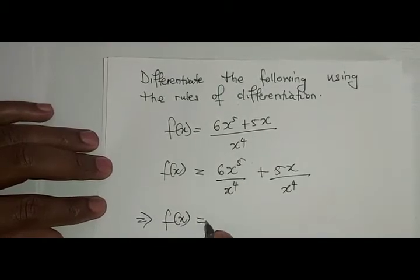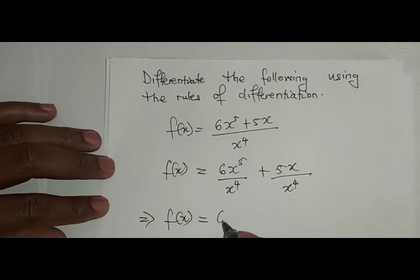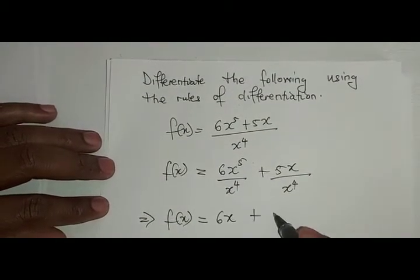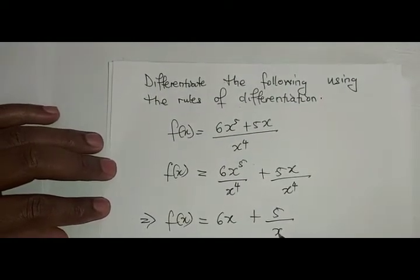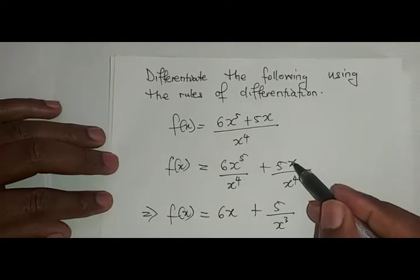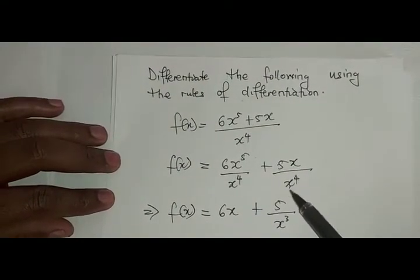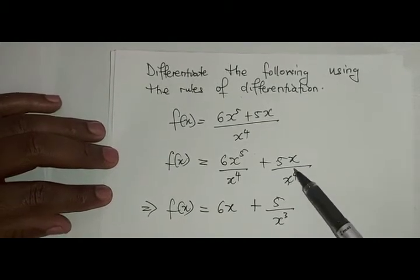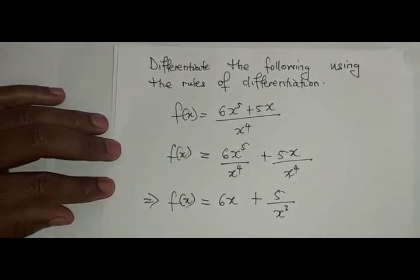Which also means that f of x is equal to, now we divide which means it will be this one becomes 6x, plus this one will be 5 over x to the power 3. If x, this one, if you say x into this one, it will be x to the power 3, one of the x cancels, then we'll be having x to the power 3 in the denominator.